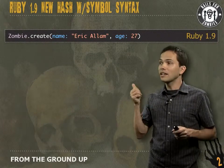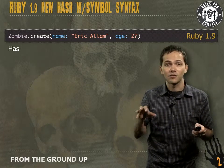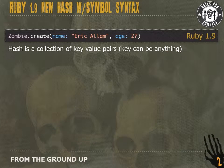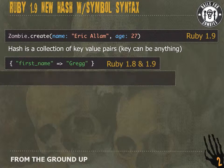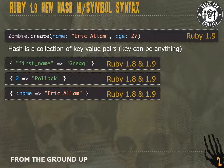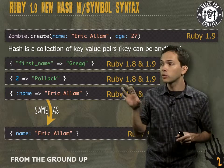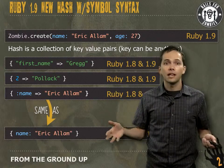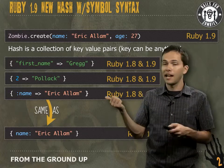You may have noticed when we created zombie Eric that we used a slightly different hash syntax. Remember, a hash is a collection of key-value pairs, and a key can be almost anything — a string (using the old hash rocket syntax), a number, or more commonly a symbol. All of these syntaxes are compatible with both Ruby 1.8 and 1.9. But if we're using Ruby 1.9, this last hash can also be written as `name:` — it's a shorter syntax. If you're getting into Rails now, you should be using Ruby 1.9.